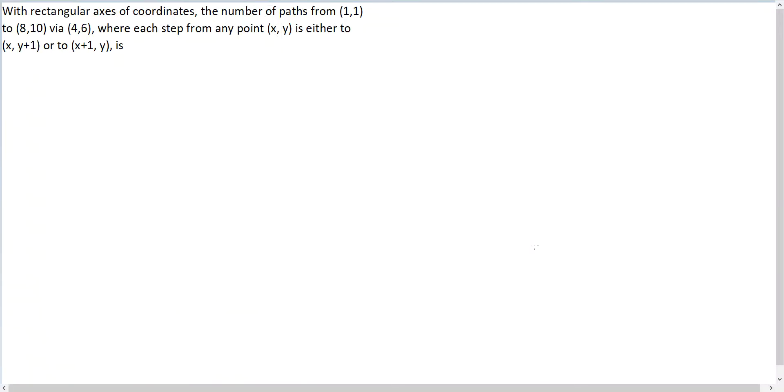Let's look at this question. With rectangular axis of coordinates, the number of paths from (1,1) to (8,10) via (4,6), where each step from any point (x,y) is either to (x, y+1) or to (x+1, y).